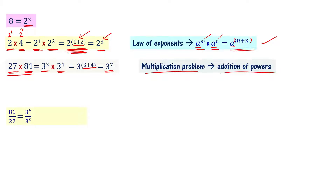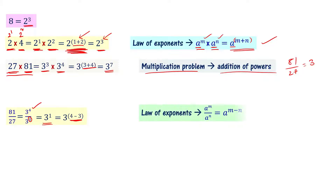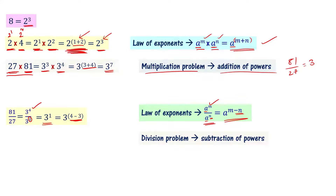81 divided by 27 can be written as 3 power 4 divided by 3 cube. The result is 3, which we can also write as 3 power 1, meaning 3 power 4 minus 3. The law of exponents states: a power m divided by a power n equals a power m minus n. The base remains the same, and we subtract the denominator's exponent. So a division problem becomes a subtraction of powers.